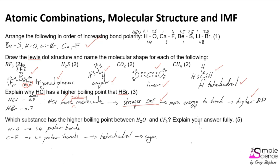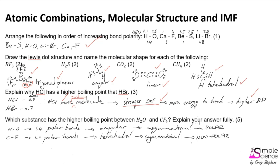CF₄ forms a tetrahedral shape, which is symmetrical, whereas the water molecule forms an angular or bent shape, which is clearly asymmetrical. When a molecule is symmetrical, it is automatically non-polar — the symmetry negates the polarity of the bonds. Our asymmetrical water molecule is therefore polar.